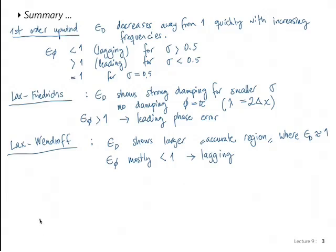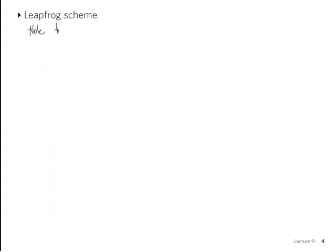For the leapfrog, we didn't finish that last lecture — that's where we ended. We'll finish by looking at leapfrog now. For the leapfrog scheme, we have the amplification factor from previous lectures, and recall that the modulus of the amplification factor is equal to 1, indicating that it has no diffusion error.